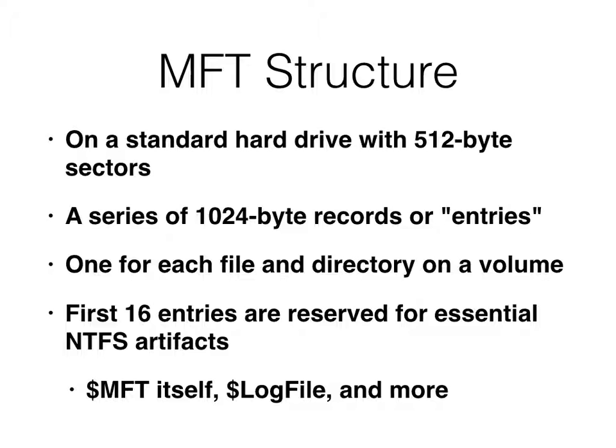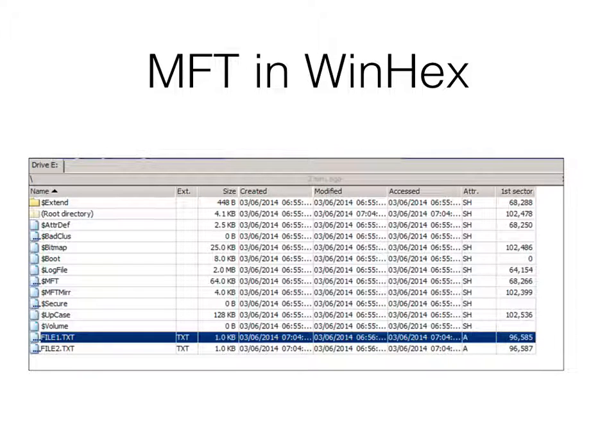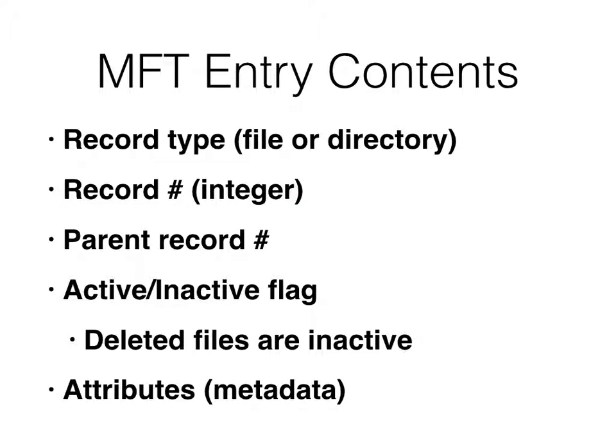The first 16 entries are essential NTFS artifacts. In the project you did, you can see MFT, log file, boot, bitmap, bad cluster, and so on — these things that start with a dollar sign are magic hidden files used to keep track of how the disk is being used. Each record has a type of file or directory, a record number like an inode number in Linux, and a parent record number. There's a special index record to make directory traversal faster; otherwise it would be very inefficient to search through the files.